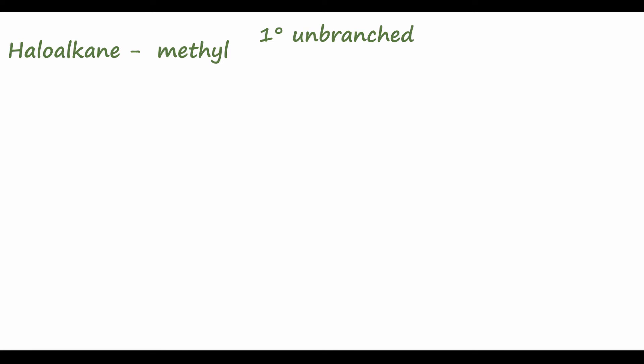When you're given a certain set of conditions and expected to determine which of these four reactions will occur, we'll have to look at two different things. The first is the identity of the haloalkane — methyl, primary unbranched, primary branched, secondary, and tertiary. Remember, that number tells us how many carbon substituents the carbon bearing the halogen has.